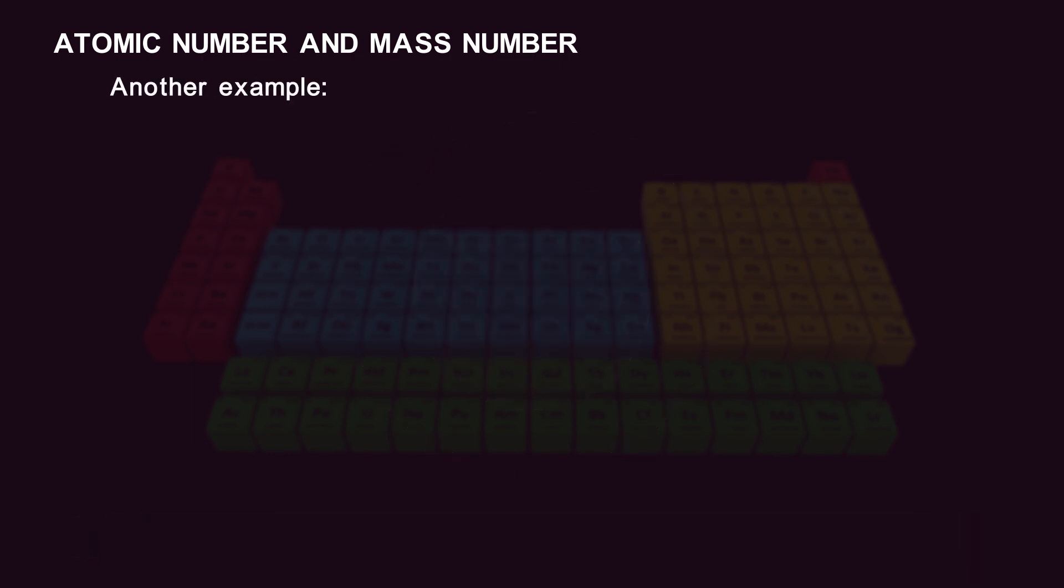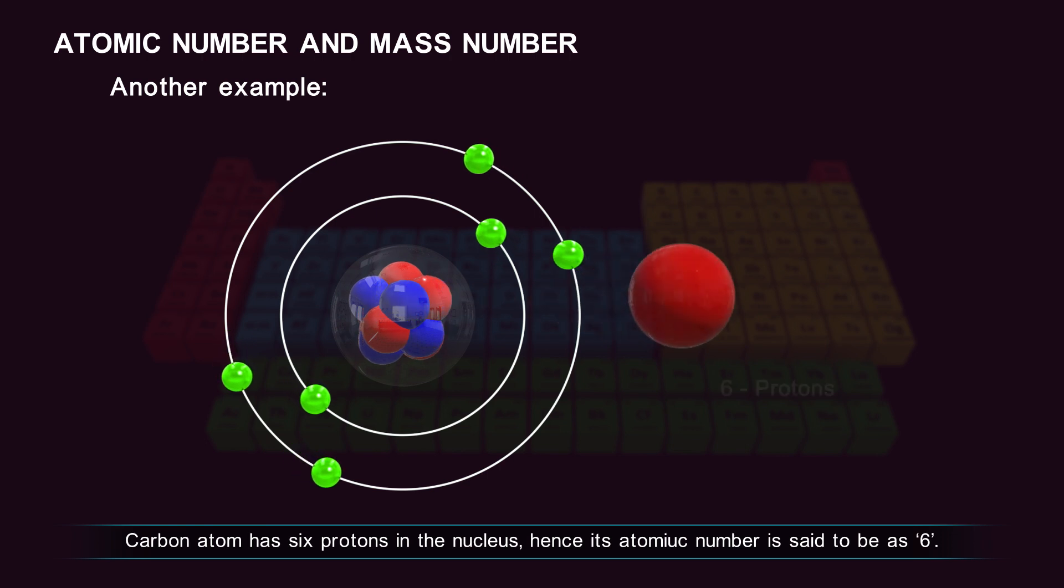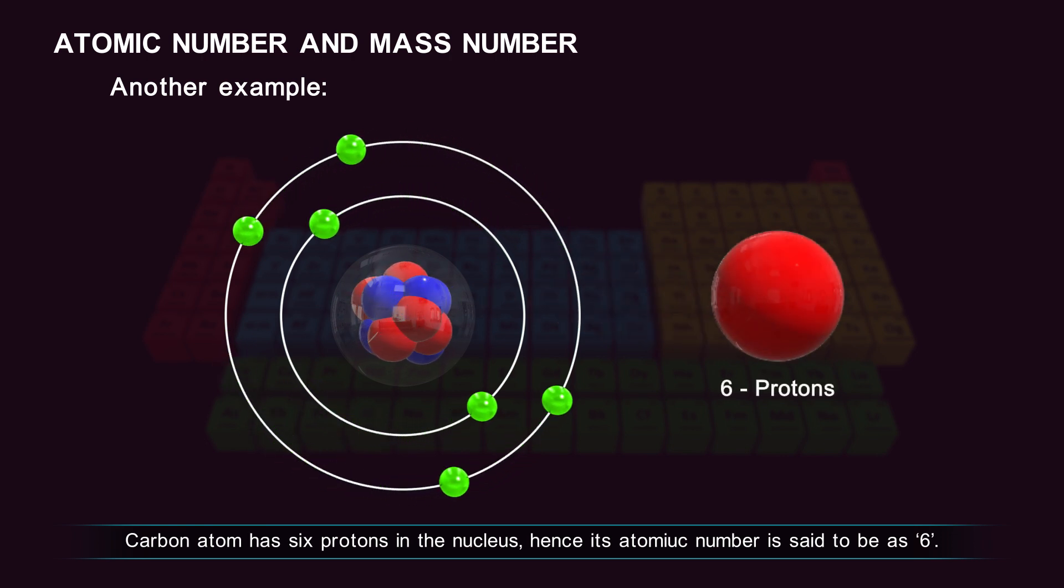Another example, a carbon atom has six protons in the nucleus, hence its atomic number is six.